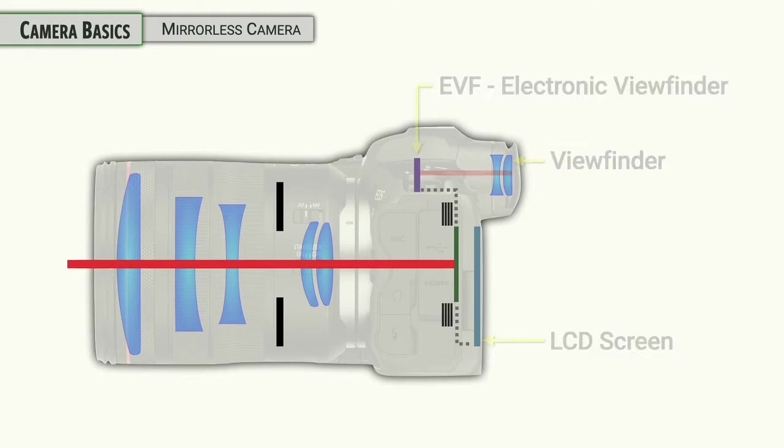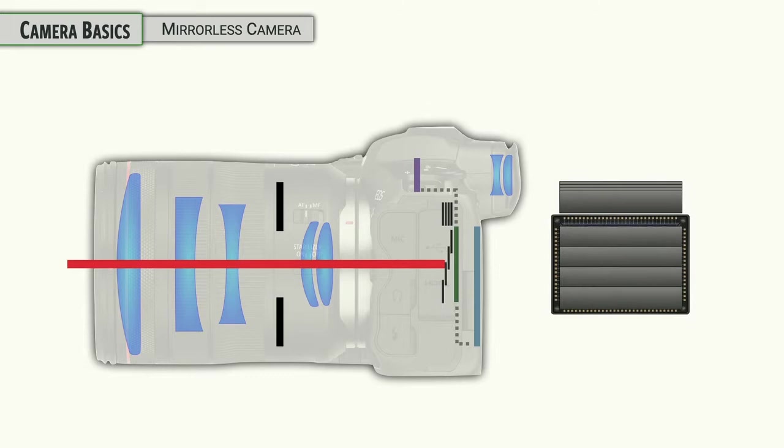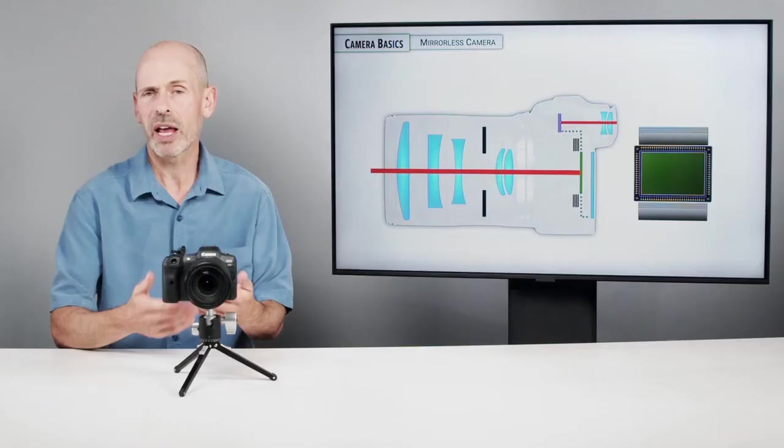When it comes time to take a photograph, we're going to need to do a couple of movements with the shutter unit. What it's going to do, and I'll show you from the side as well as in front, is it needs to close the shutter to prepare the sensor for gathering light. It then opens up, gathers the light, and then closes it, and then reopens again so that you can see the image for the next shot.